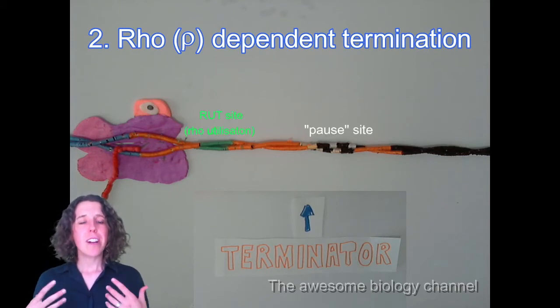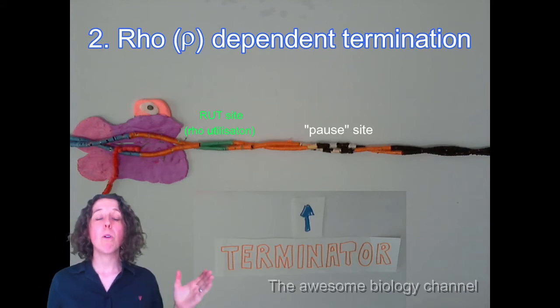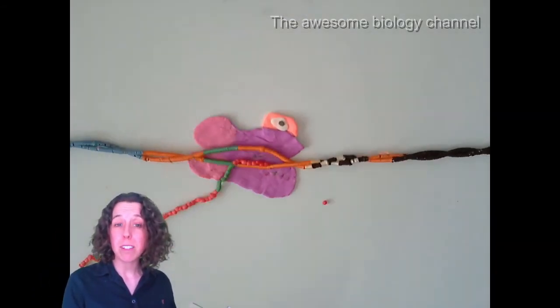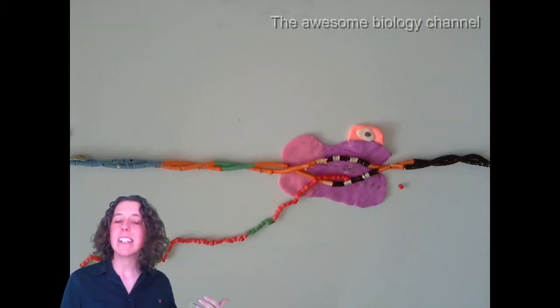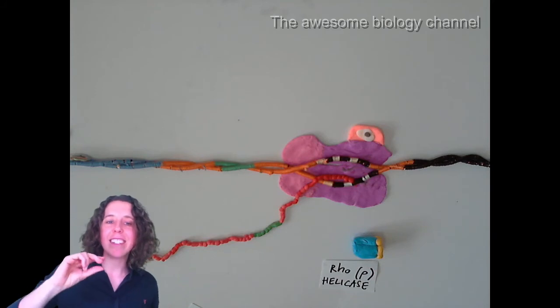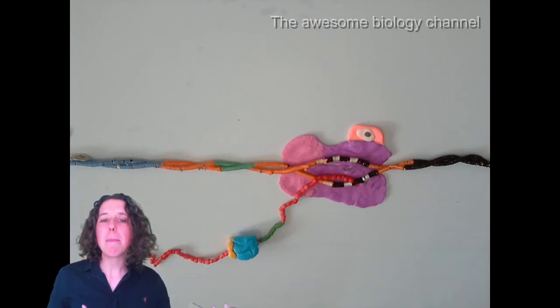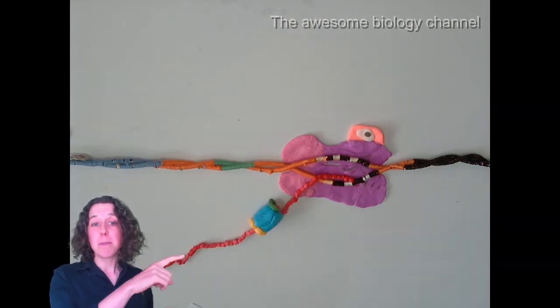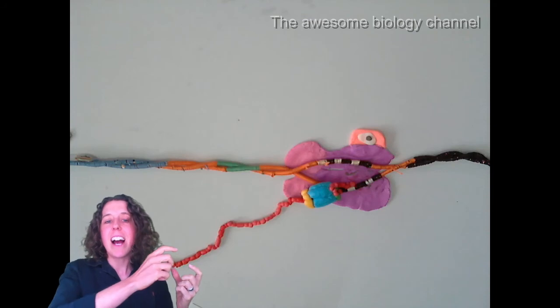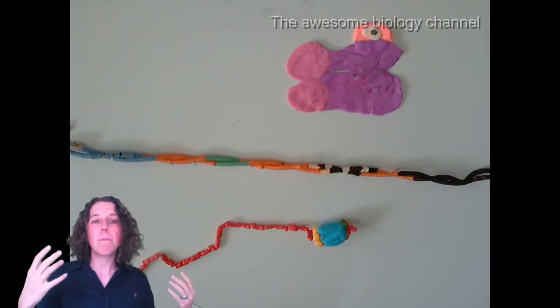Now in rho-dependent termination, on our terminator region, we've got a RUT site or a rho-utilization site and a PAUSE site. And our RNA core polymerase enzyme, he's going to go through, he's going to transcribe that RUT site onto RNA. And then when he hits the PAUSE site, he's going to slow down his transcription. Now the RUT site that's been transcribed, it's there because of this protein, a rho-helicase protein with six subunits. This guy, this helicase, he's actually like a little motor. He can spin around if he's using up ATP. So this rho-helicase protein, he can come and bind to that RUT site and then he'll use up ATP to motor his way up the transcript. So he'll bunch it all up. And then when he gets up to the core enzyme, he'll act as a helicase, which means he'll separate that RNA from that DNA from the template strand and the whole complex will dissociate.